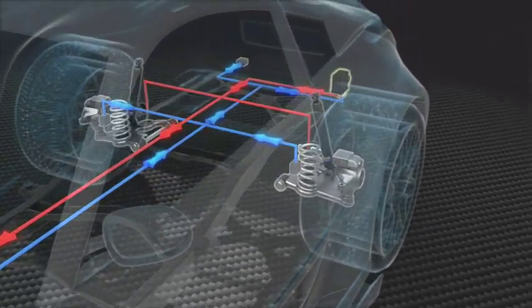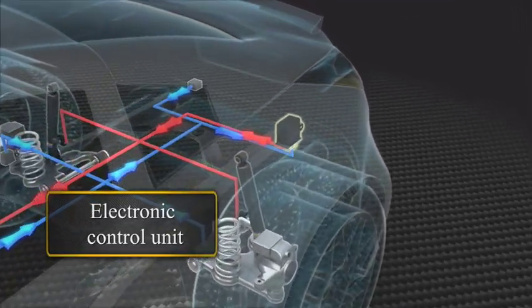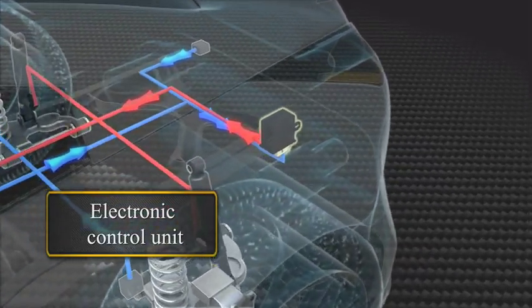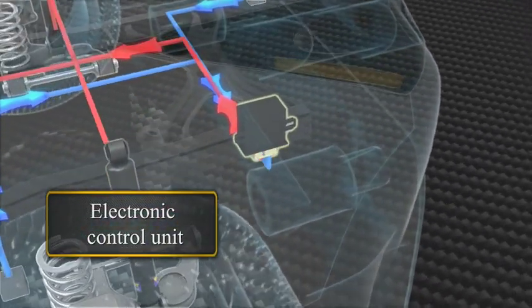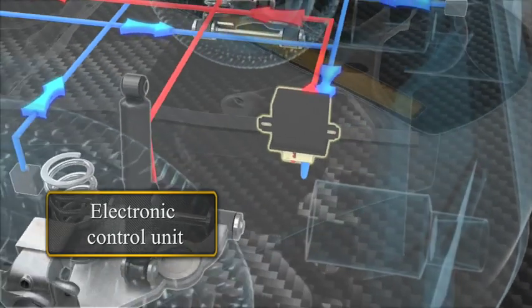This data is analyzed continuously every six milliseconds in the system's electronic control unit, which decides the correct force to be applied to each damper.